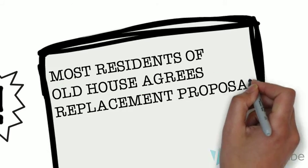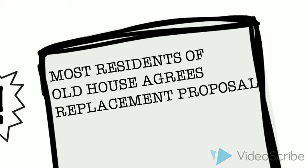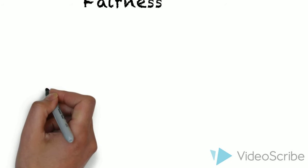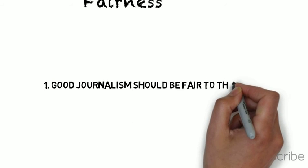So let's summarize. Good journalism should be fair to the facts. Fairness can be achieved if the media or the journalist is not sided to one side of the story and are not lazy.